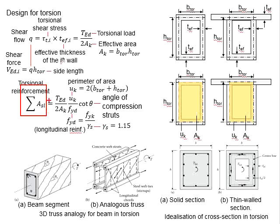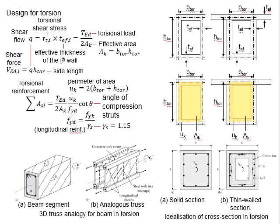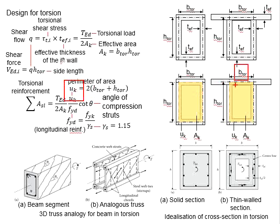The total required torsion reinforcement area is defined by this equation. The shear flow equation is used, along with μ_k, which refers to the perimeter of the effective torsion area. Taking this as an example, μ_k will be the sum of all four sides. It is not to be confused with the effective area A_k, which is b times h, while μ_k refers to the perimeter.